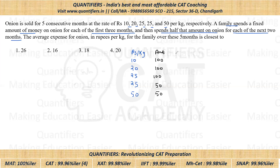So how much quantity will they get? Amount is 100 rupees, price is 10 rupees per kg, so quantity would be 10 kg — 100 divided by 10. So 10 kg in the first month. Similarly, 100 by 20 gives 5 kg; 100 by 25 gives 4 kg; 50 by 25 gives 2 kg; and 50 by 50 gives only 1 kg.